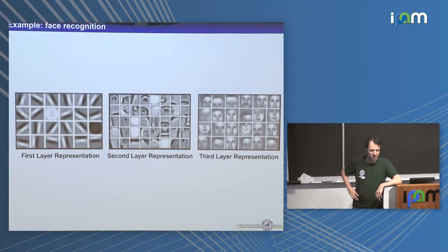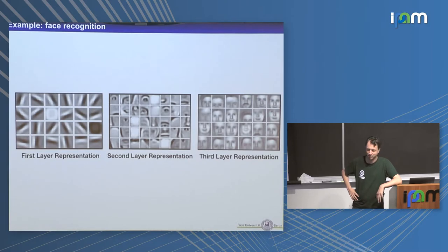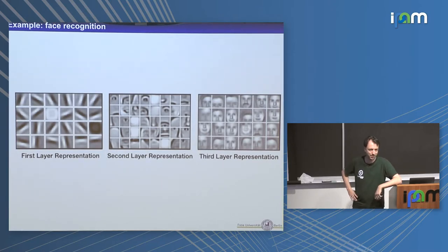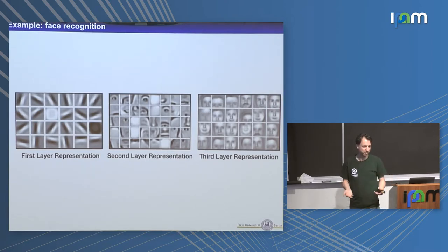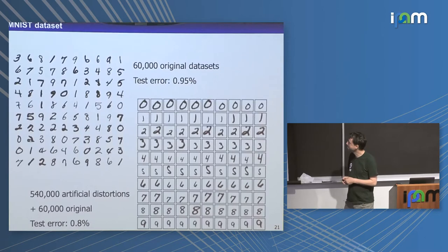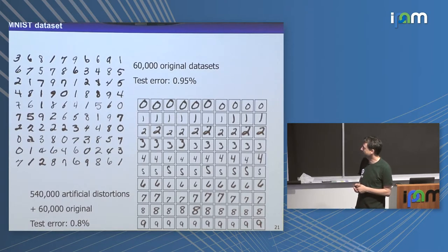If classes are missing from your training set — say, bearded faces — it's very difficult to say something about completeness in nonlinear algorithms. For a linear machine like a kernel machine, you can talk about the vector space you're covering with your solution. But as soon as you add a layer and the machine becomes nonlinear, you have to talk about manifolds, and you don't really know when your space is complete.